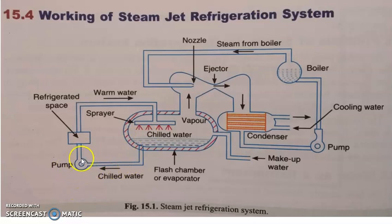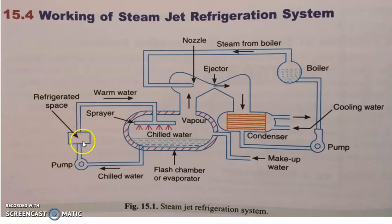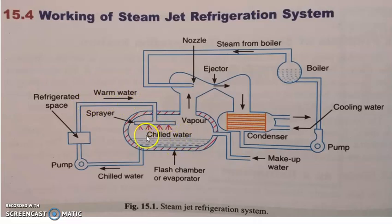So, we will be circulating this chilled water in and around the refrigerated space by means of a circulating pump. This chilled water, after passing through this refrigerated space, it will be absorbing heat from that refrigerated space. There will be some heat load kept at this refrigerated space. It can be some vegetables, or it can be some human beings, or it can be some equipment which need to be refrigerated.